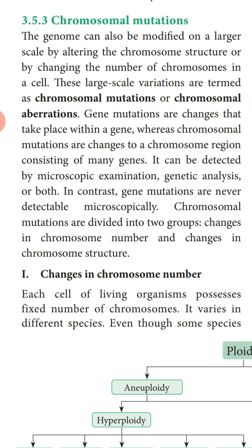Gene mutation is related to only one gene — change is taking place in one gene or in one gene base pair, so we call it gene mutation or point mutation. Whereas in chromosomal mutation, many genes are involved; the change is taking place in a particular segment of the chromosome, and in that segment there are numerous genes. So many genes are affected, and it can be detected by microscopic examination, genetic analysis, or both. In contrast, gene mutations are never detectable microscopically.